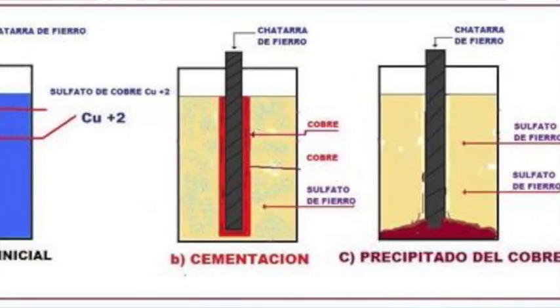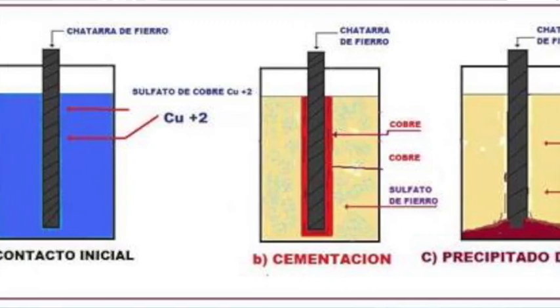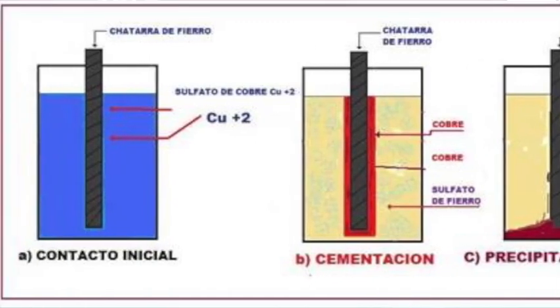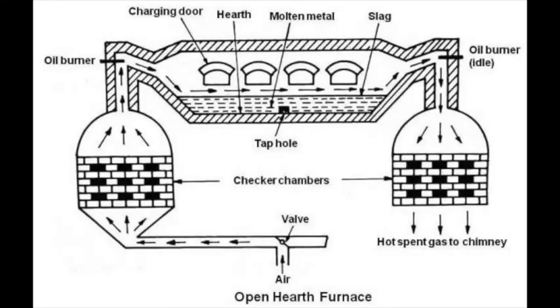The second type is liquid cementation, where molten salts are used, typically sodium cyanide. The advantage of this method is that it allows greater control of the penetration and gives more homogeneity in the carburized layer. The third type is gas cementation, where parts are placed in a furnace surrounded by a gaseous atmosphere composed of hydrocarbons. An advantage of this method is that it allows cementing a large number of pieces at one time.